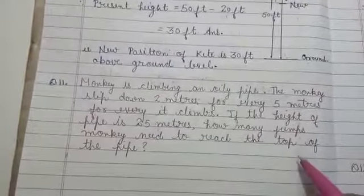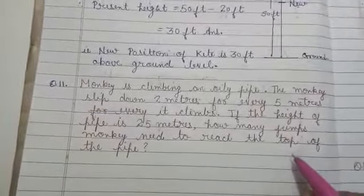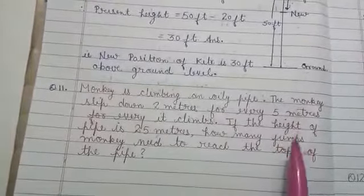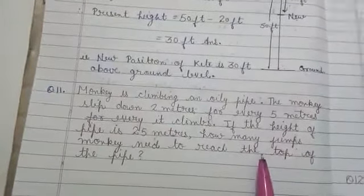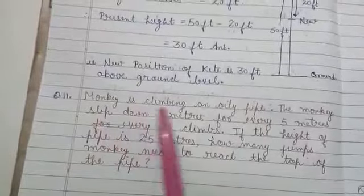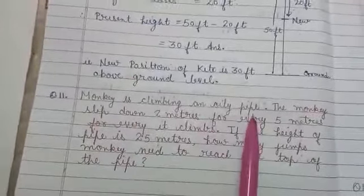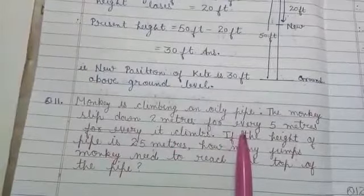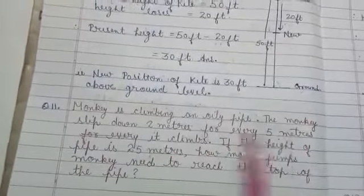This is question 13. See class, read the question very carefully. Understand the meaning. Only then you will be able to solve this question. And please listen to my words very carefully so that you will not face any problem. See class, monkey is climbing an oily pipe. The monkey slips down 2 meters for every 5 meters it climbs.